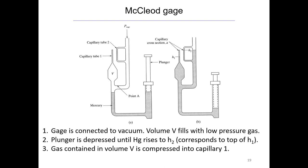The gauge is connected to a vacuum right here; the vacuum pressure comes in and fills volume V with that low-pressure gas. Then the plunger is depressed — that's when we transition to state B — and it's depressed until the mercury rises to h₂, which corresponds to the top of h₁. All that volume of gas gets compressed into the capillary, and because you're compressing that very low-pressure gas it reaches a higher pressure, so you can now get a measurable fluid column.